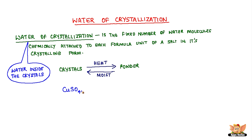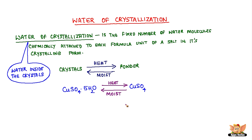Copper sulphate crystals, which seem to be dry, contain water of crystallization. When we heat the crystals, this water is removed and the salt turns white. If you moisten the crystals again with water, you will find that the blue color of the crystals reappears.